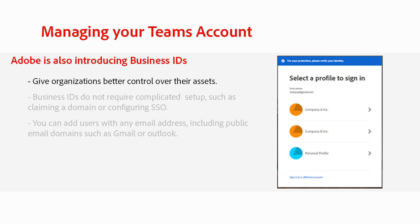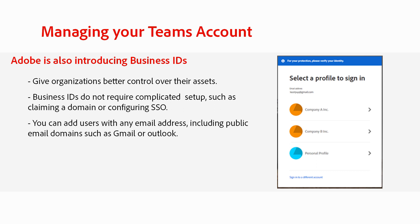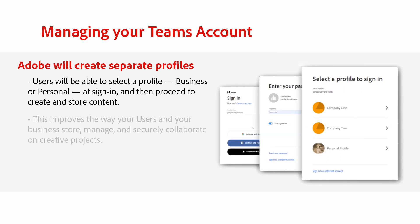Adobe is also introducing Business IDs to give organizations better control over their assets. Business IDs do not require a complicated setup, such as claiming a domain or configuring SSO. You can add users with any email address, including public email domains such as Gmail or Outlook. If your users have multiple Adobe plans associated with the same email address, Adobe will create separate profiles with dedicated storage for each of their plans. To easily work and organize content across your business and individual plans, your users will be able to select a profile — business or personal — at sign-in and then proceed to create and store content.